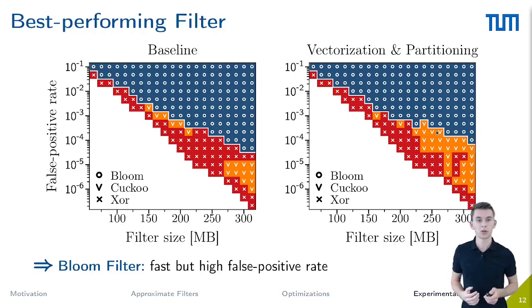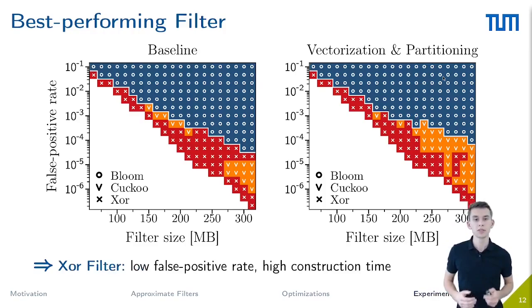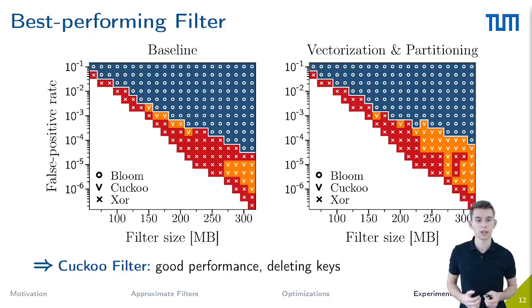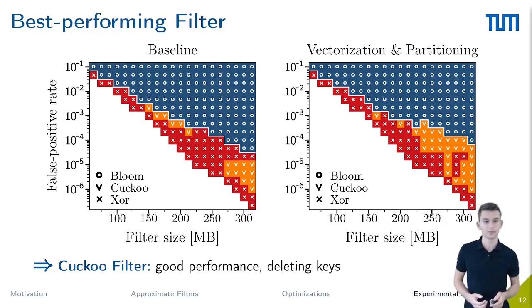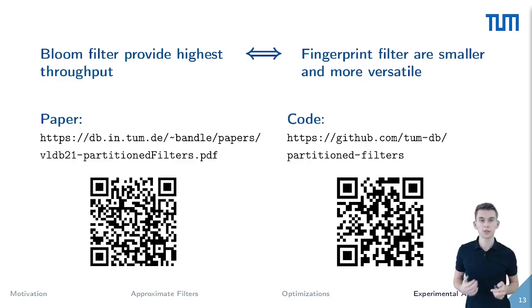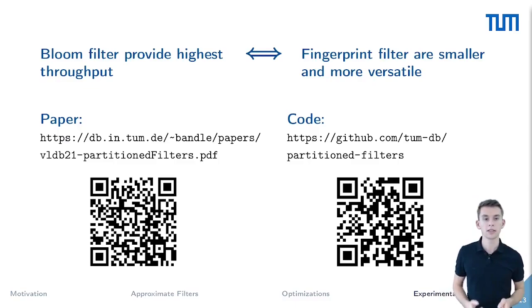Bloom filters are nevertheless the optimal choice when high false positive rates or large filter sizes are acceptable, so in the blue area above the white line. XOR filters use the given space most efficiently and provide the lowest false positive rates at the cost of high construction times. Cuckoo filters do not achieve those low false positive rates, but instead offer good performance and more functionality, like deleting keys or inserting additional ones. Where space consumption can be improved further, the Morton filter is an option. In conclusion, Bloom filters offer the highest throughput, but in combination with vectorization and partitioning, we can trade a little performance for smaller and more versatile fingerprint filters. For more insights and experiments on approximate filters, have a look at our paper or try the code yourself.